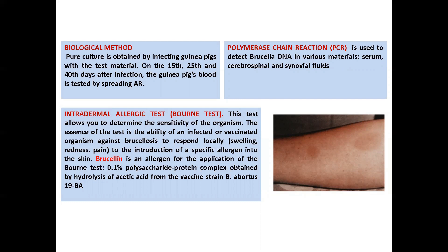Intradermal allergic test: this test allows determination of the sensitivity of the organism. The essence of the test is the ability of an infected or vaccinated organism to respond locally by swelling, redness, or pain to the introduction of a specific allergen into the skin. Brucellin is the allergen used for the Burnett test — a 0.1% polysaccharide-protein complex obtained by hydrolysis with acetic acid from the vaccine strain Brucella abortus 19-BA.